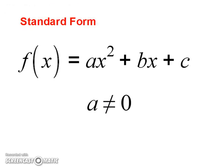Let's look at the standard form. It's going to be f of x equals ax squared plus bx plus c. Now, for this to work and be in standard form, a cannot be equal to 0. Because if a equals 0, that means x squared doesn't exist, which means you no longer have a quadratic.